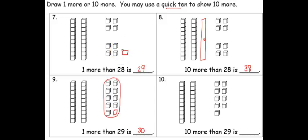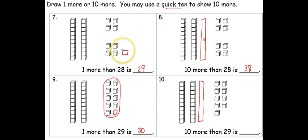In question ten, we're asked what is ten more than twenty-nine. I'm going to draw a quick ten to show my ten more. Now I have three groups of ten and I still have nine ones. So ten more than twenty-nine is thirty-nine.